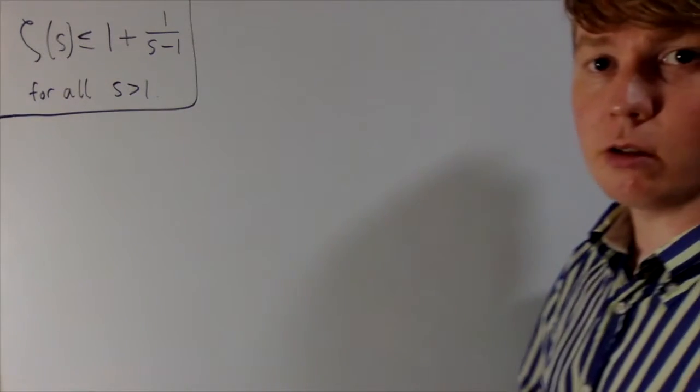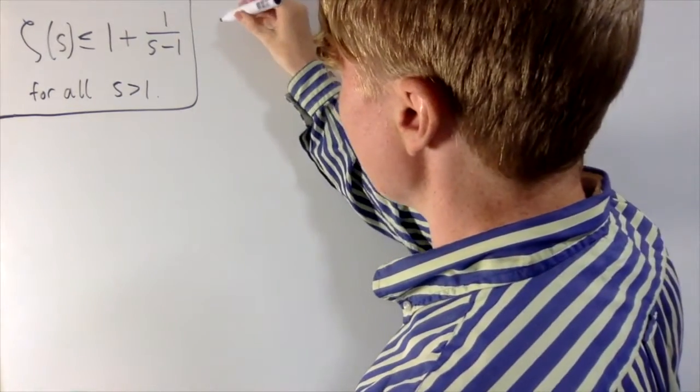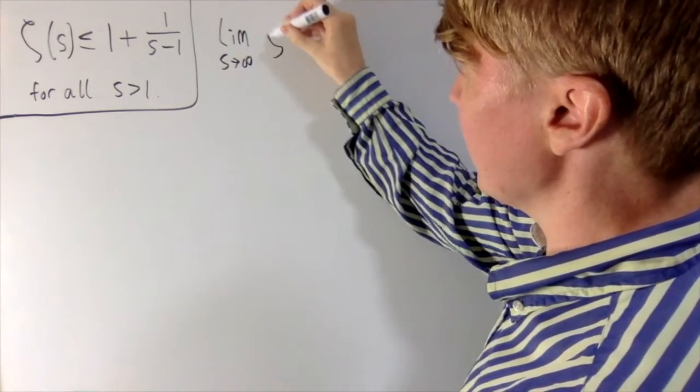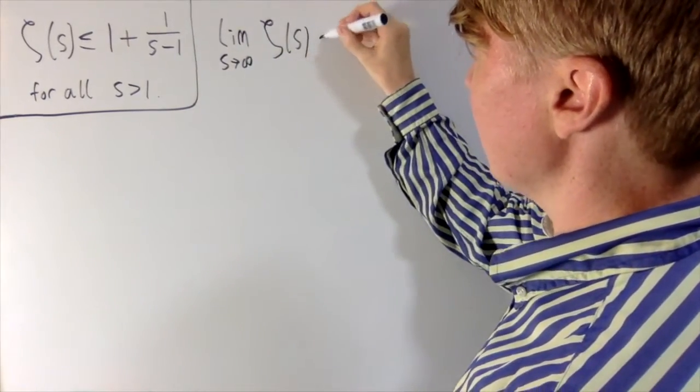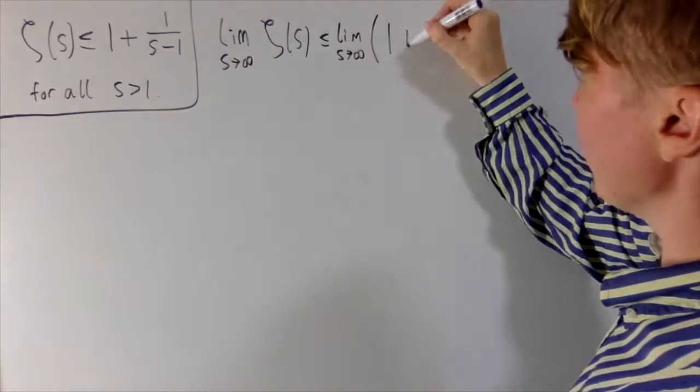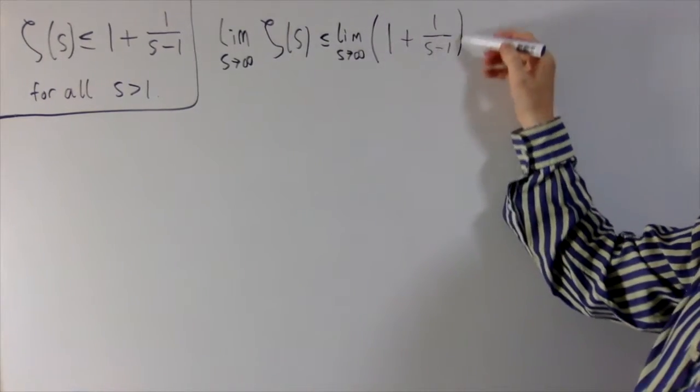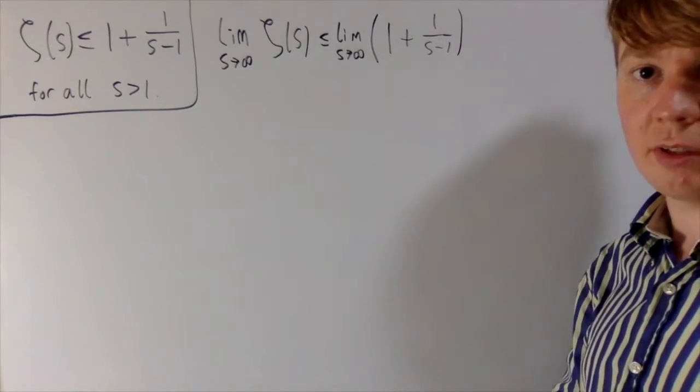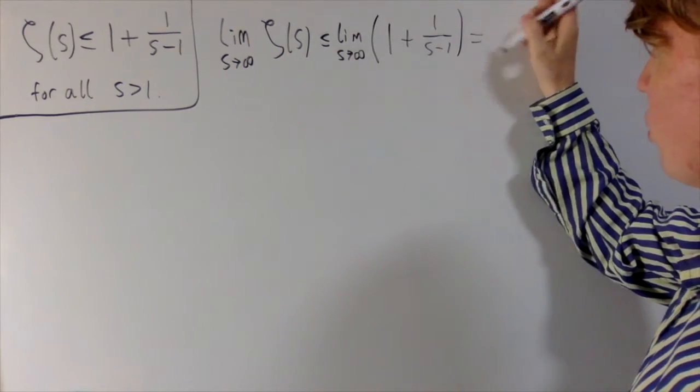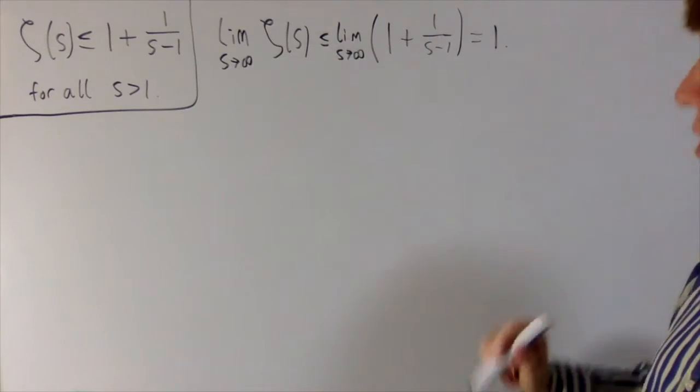Now we can put this inequality to use, because we know that limits preserve weak inequalities, so we know that the limit as s tends to infinity of zeta of s, this is less than or equal to 1. And then you can see this term here, 1 over s minus 1, as s goes to infinity, it's just going to converge to 0, so this is equal to 1. So we've shown that the limit of the zeta function is less than or equal to 1.